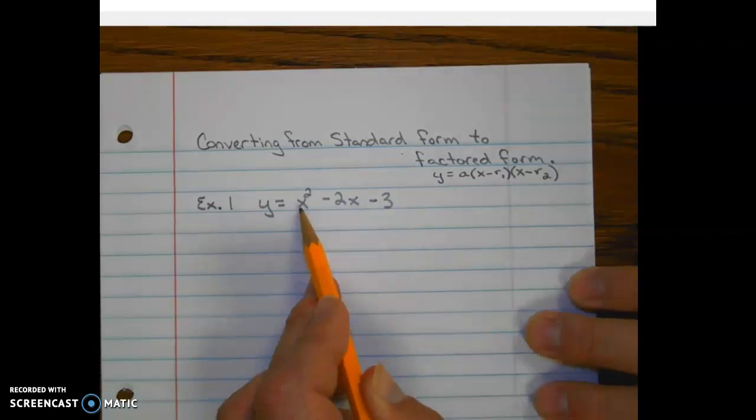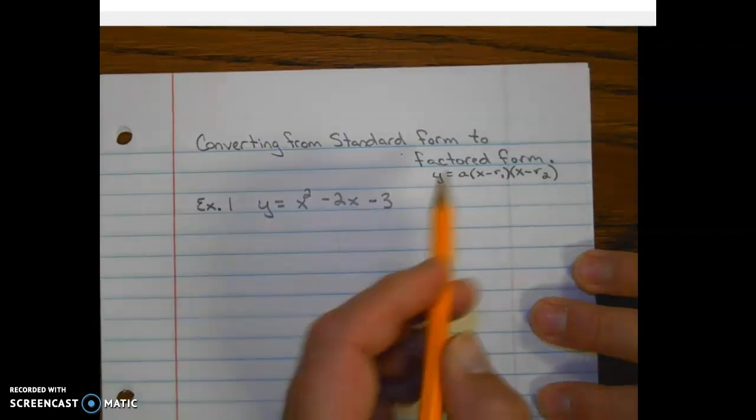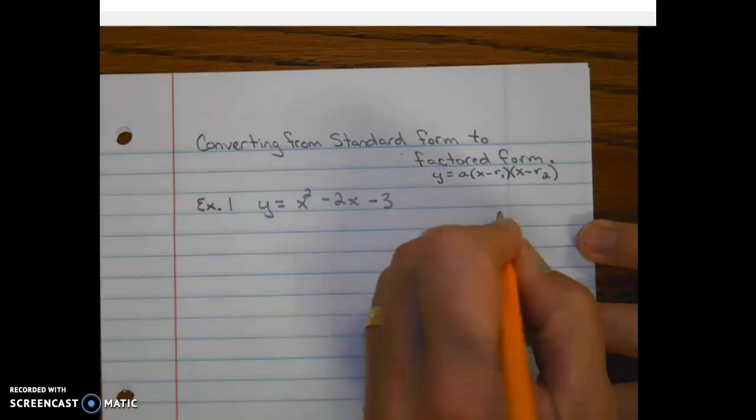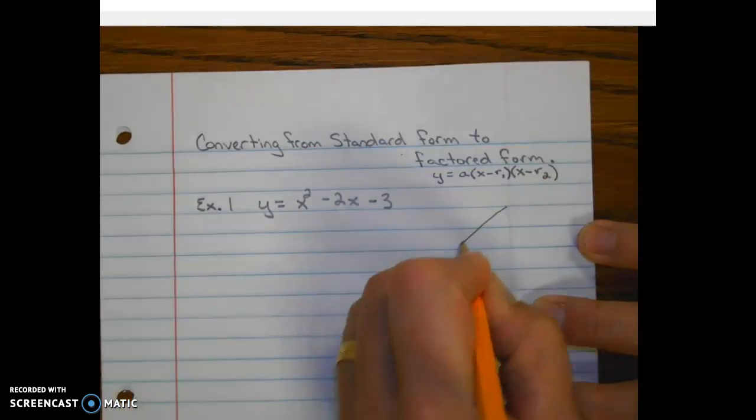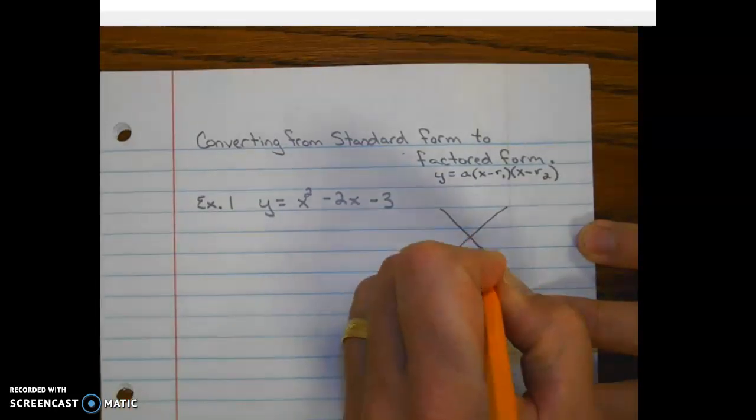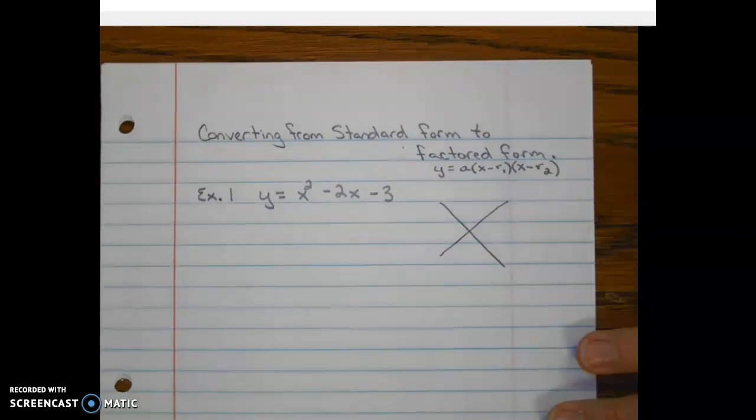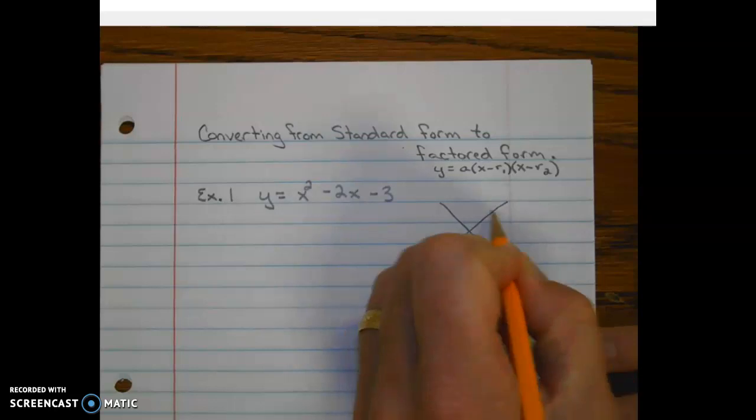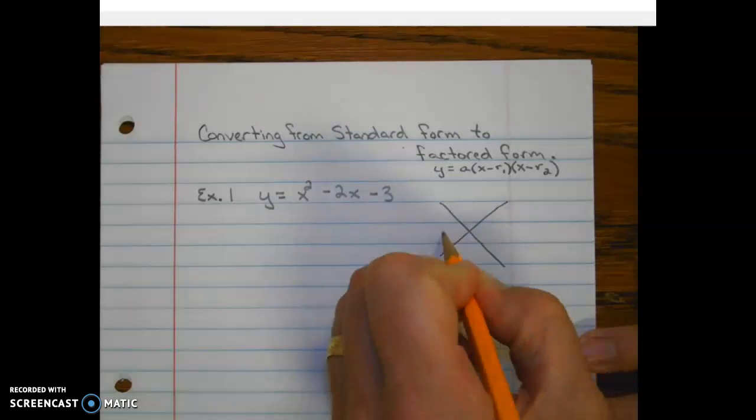So the way we factor trinomials in this class is we use this little graphic organizer that I like to call the x-factor. So we first start by drawing an x and then we put numbers in these different locations.